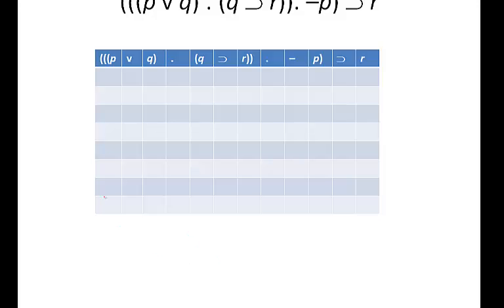Now we lay out the truth tables. We have three variables — three declarative sentences: P, Q, and R. We know we're going to have 2 to the power of n rows. We'll set up our columns in the usual manner and remember our conventional combinations of truth values. So P will have four Ts then four Fs, Q will have two Ts, two Fs, two Ts, two Fs, and R will alternate T, F, T, F, T, F, T, F.